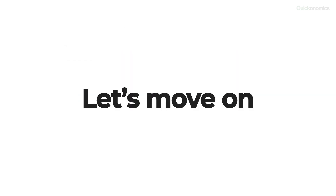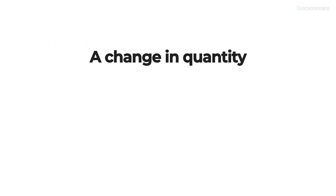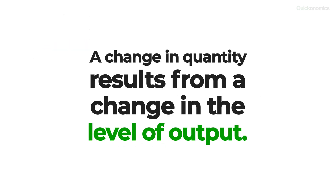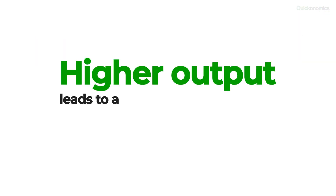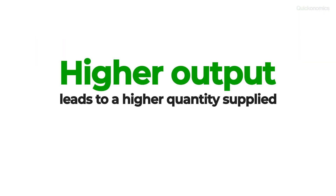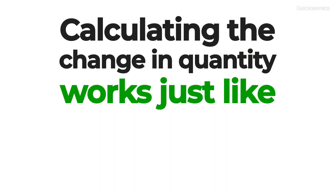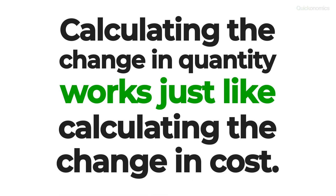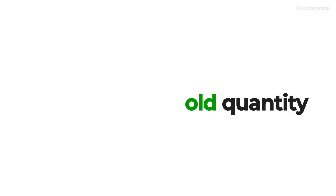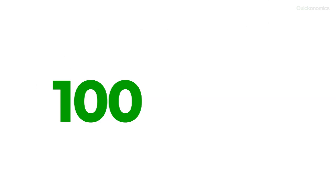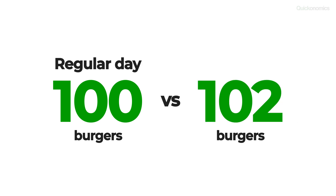Now let's move on to step 2: the change in quantity. A change in quantity results from a change in the level of output — a higher output leads to a higher quantity supplied of a good or service, and vice versa. Calculating the change in quantity works just like calculating the change in cost. All we need to do is take the old quantity and subtract it from the new quantity. In the case of Margin Burger, the change in quantity is 2, because they sell 100 burgers on a regular day and 102 burgers today.